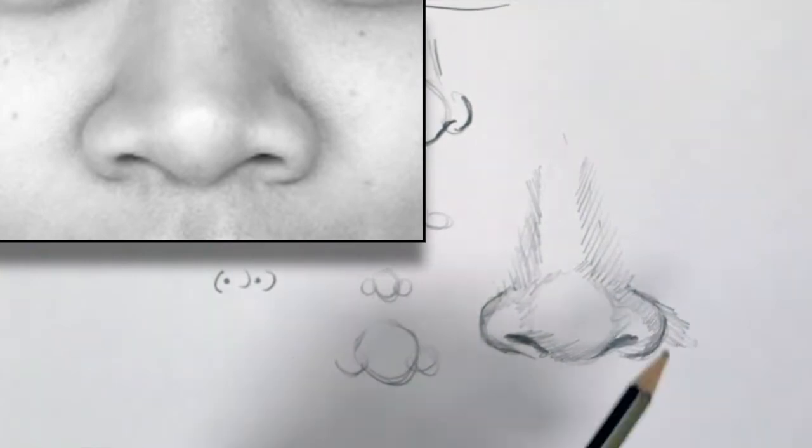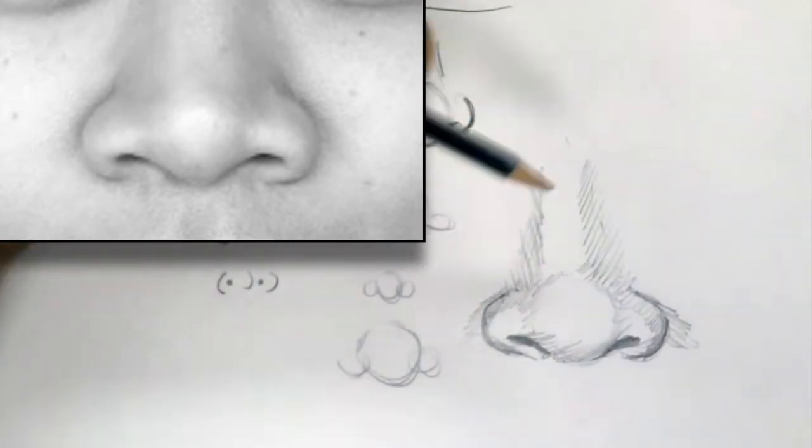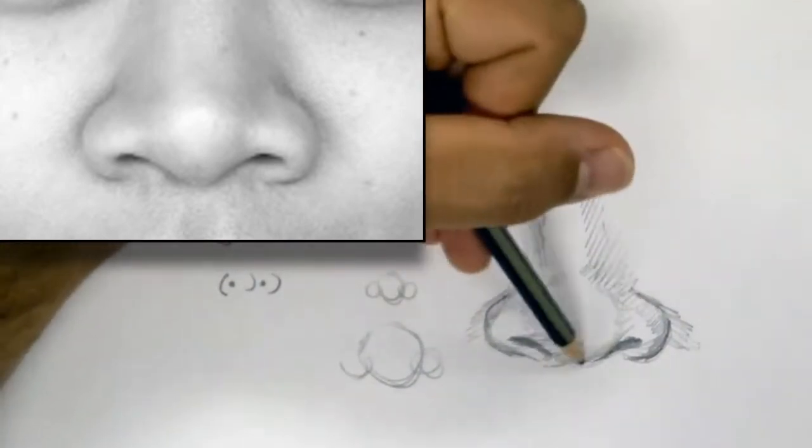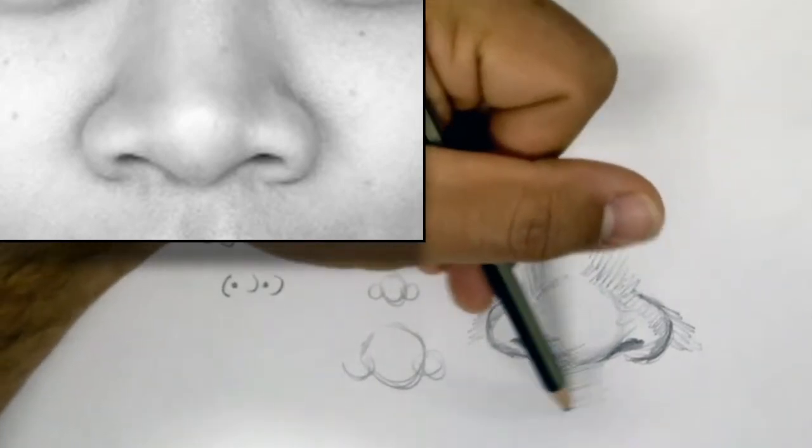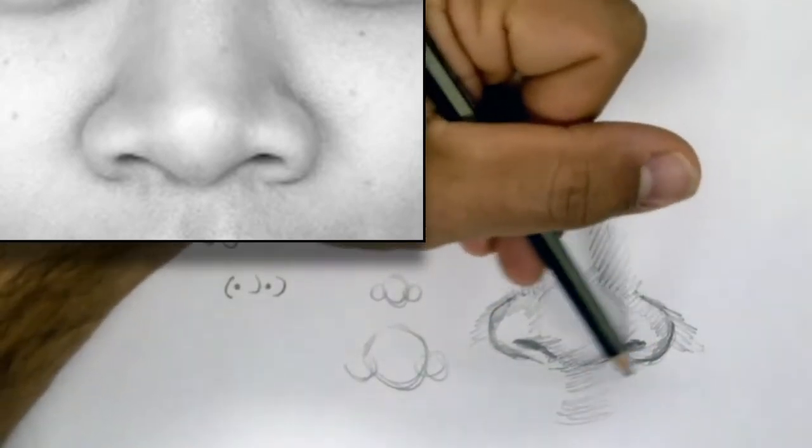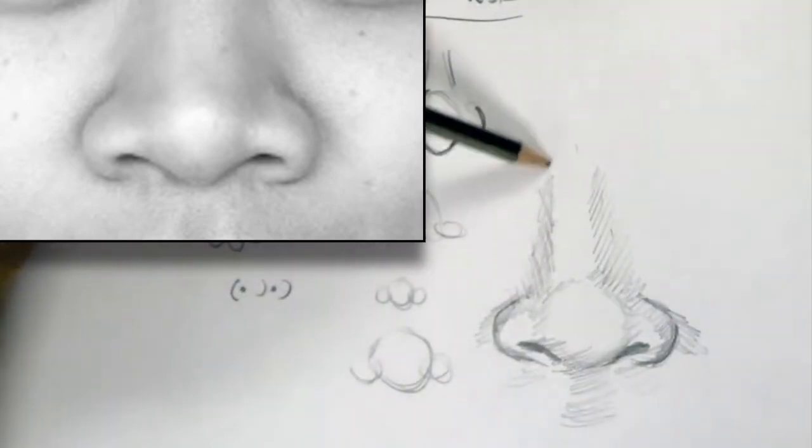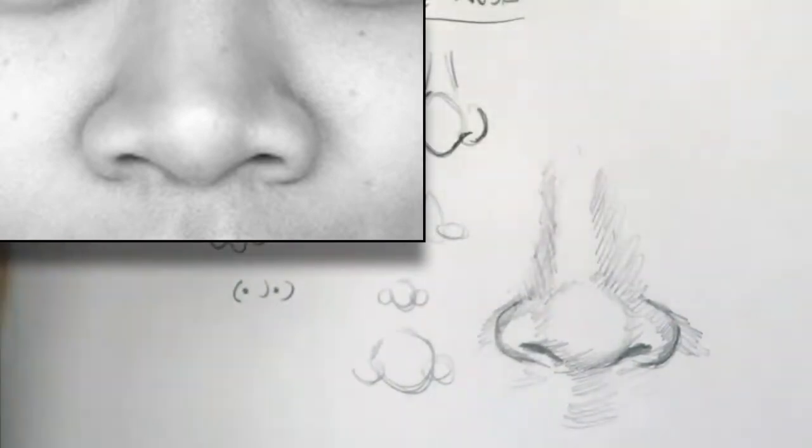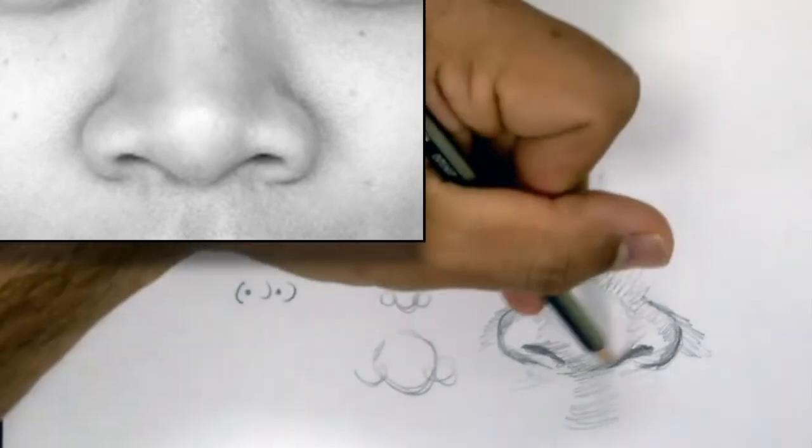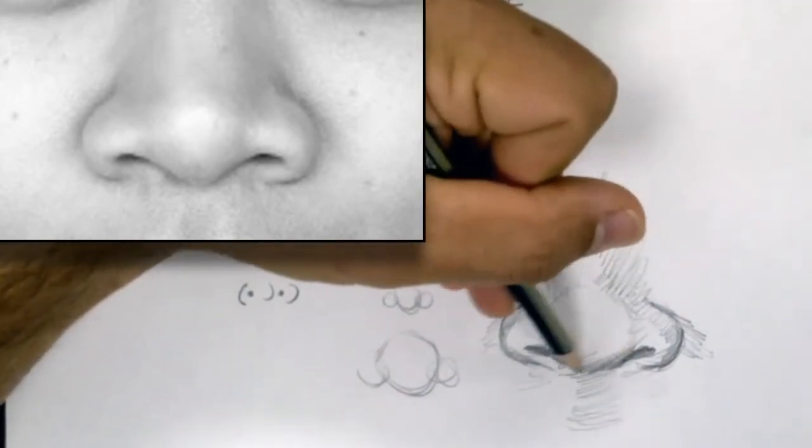I'm also going to go down to the cupid's bow or the upper part of the upper lip, that little patch of shadow that appears in the concave section between the nose and the mouth.